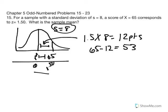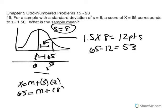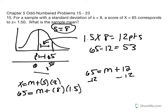Another way to approach this is to use an equation: x equals the mean plus the standard deviation multiplied by the z-score. Replacing variables: 65 equals the mean plus 8 times 1.5, which simplifies to 65 equals m plus 12. Subtracting 12 from both sides gives us 53 equals the sample mean. Both the visual and algebraic approaches lead to the same answer.